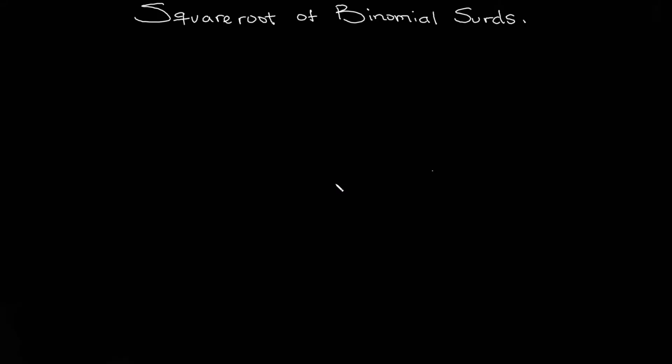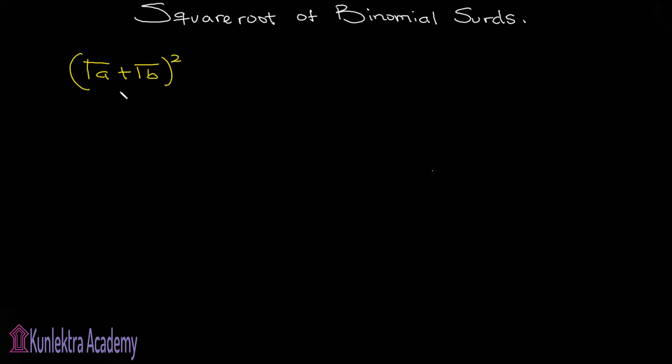We'll be talking about the square root of binomial surds — how can we find the square root of binomial surds? As I've explained what binomial surds means earlier, I'll be using an illustration to explain this. Let's assume we're given root a plus root b, whole square.